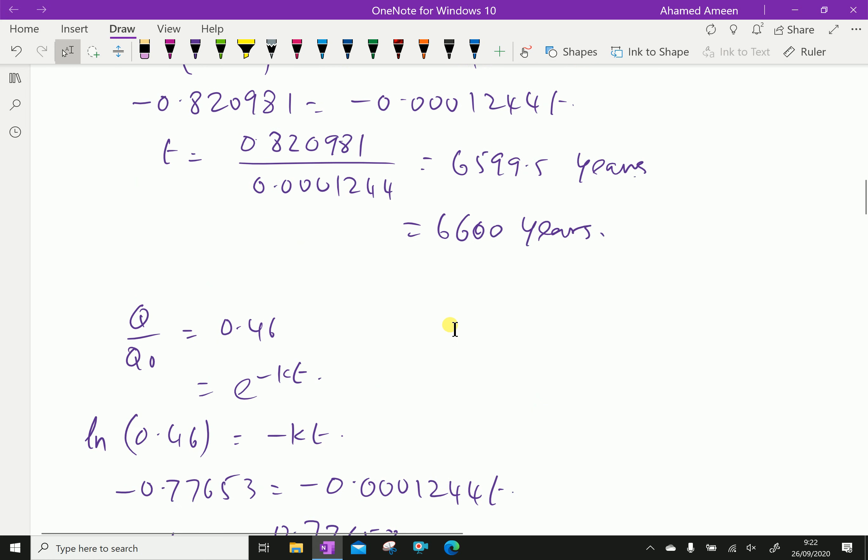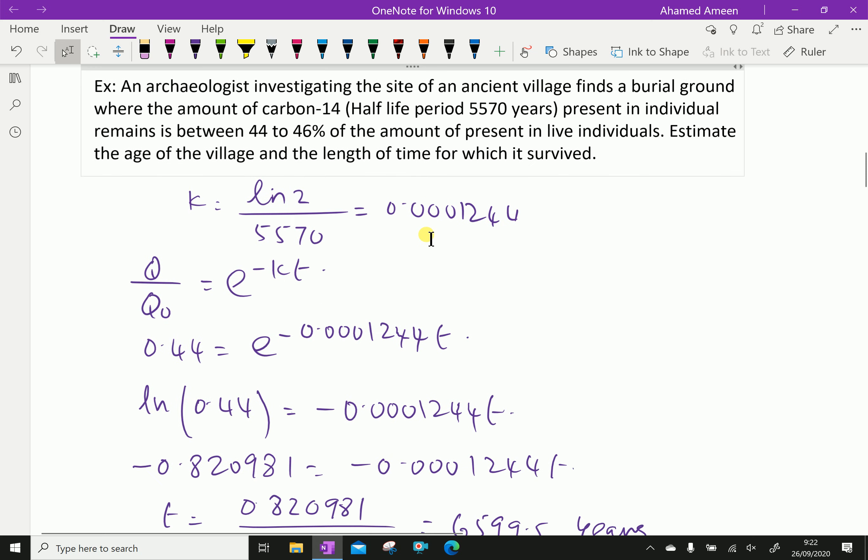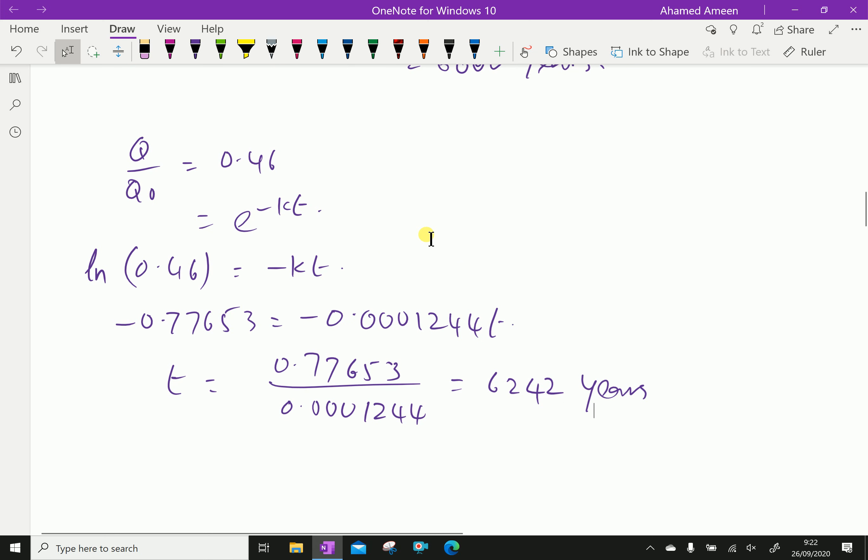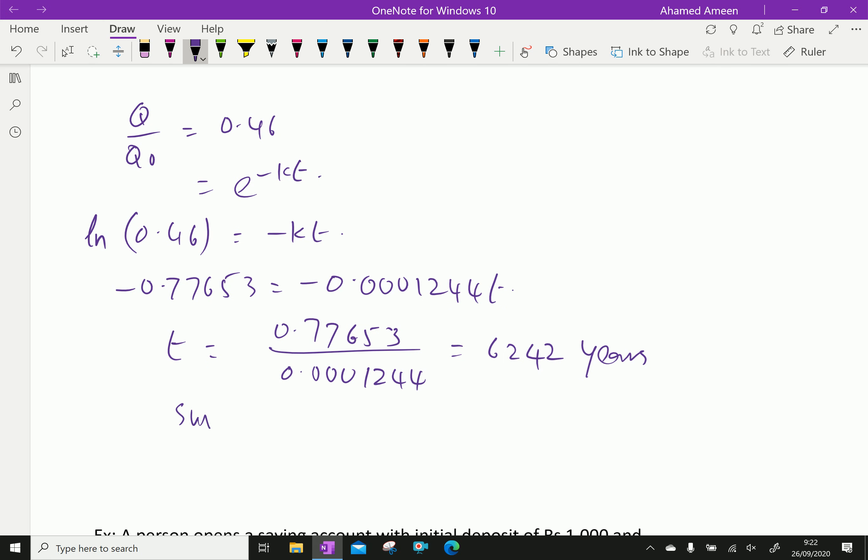Now we will find the length of time they survived. The people survived for the survival time. Survival time is 6600 years minus 6242, which gives 358 years. Therefore, in the ancient village, the people lived for 358 years.